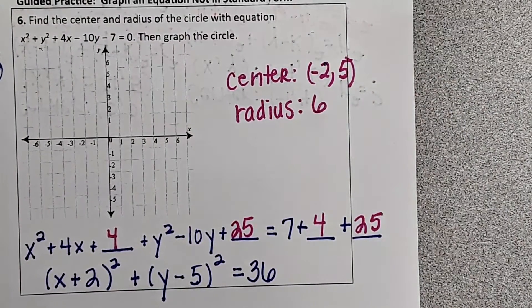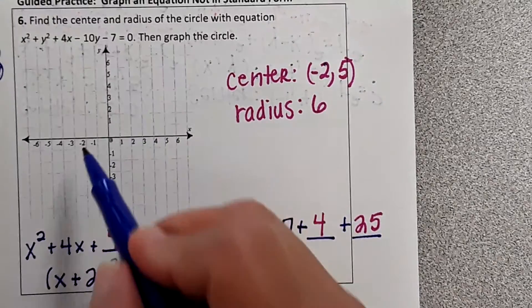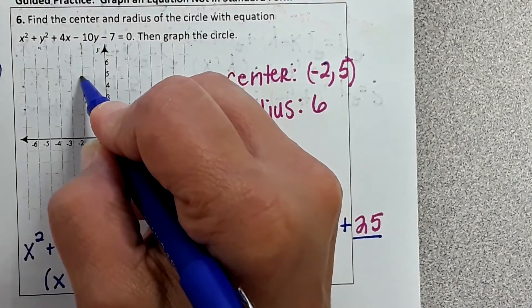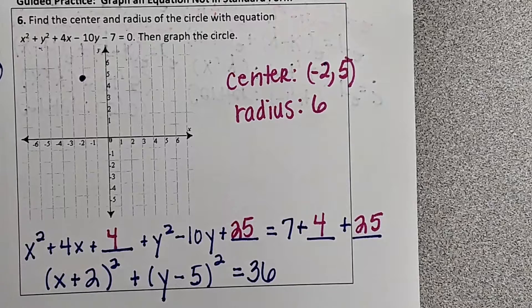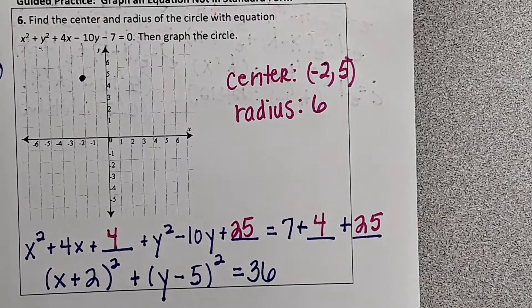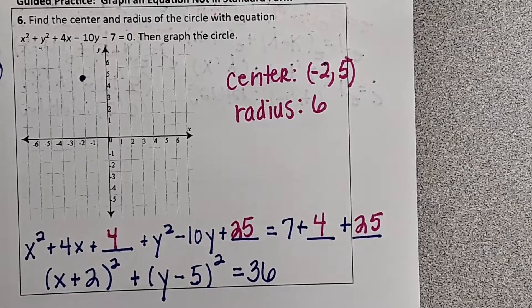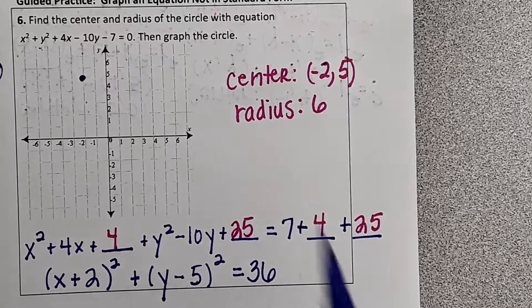So now we can graph that. We're going to go over to negative 2, up 5. One, two, three, four, five. And because my radius is 6, I'm going to go up 6 from the center, down 6 from the center, right 6 from the center, left 6 from the center.